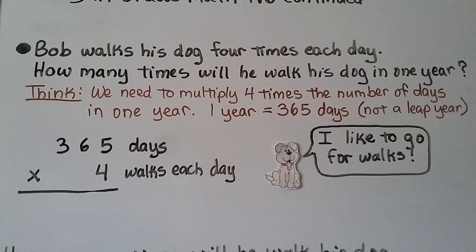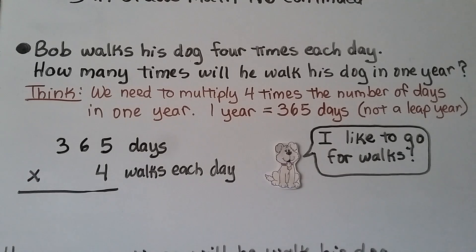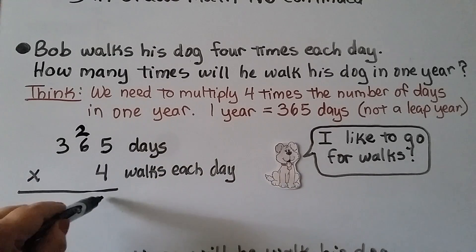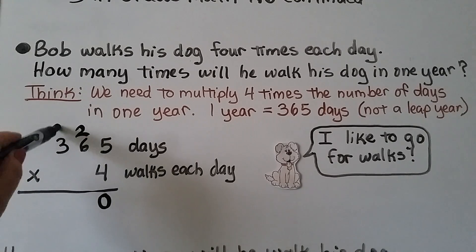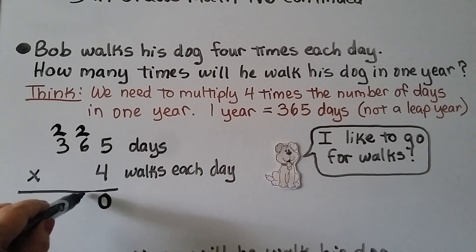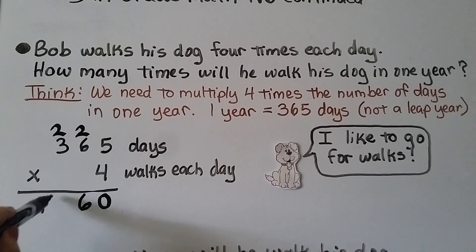Bob walks his dog four times each day. How many times will he walk his dog in one year? We need to multiply four times the number of days in one year — 365 days, not counting leap year. We multiply 4 times 5 is 20 — regroup the 2, write the 0. Four times 6 is 24, plus 2 is 26 — regroup the 2, put the 6 down. Four times 3 is 12, plus 2 is 14. That's 1,460 walks each year.